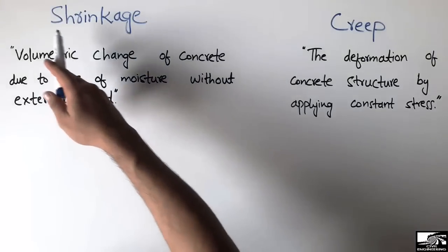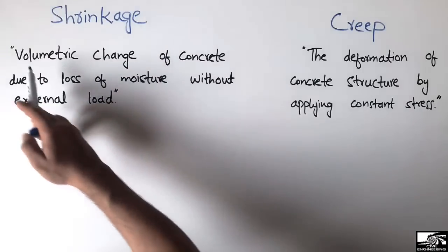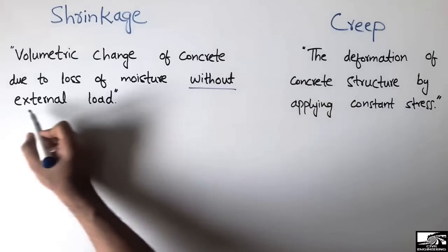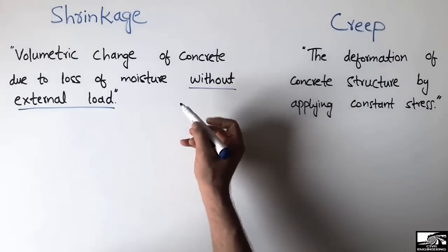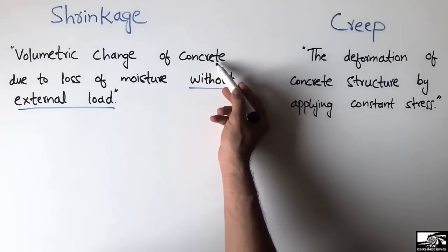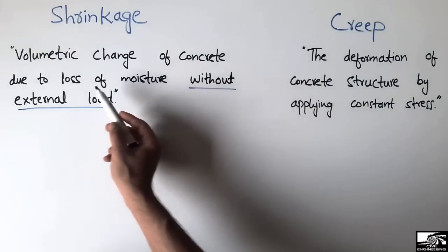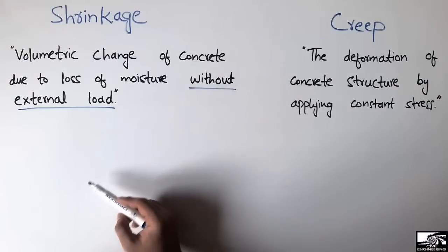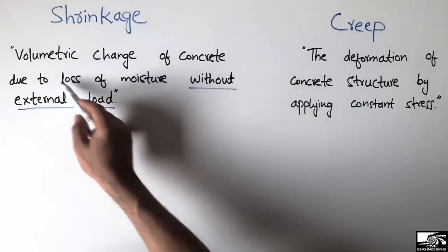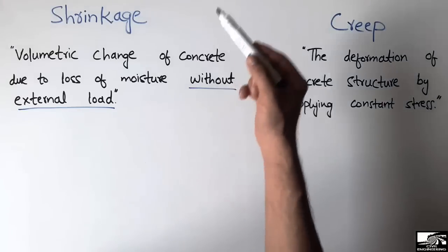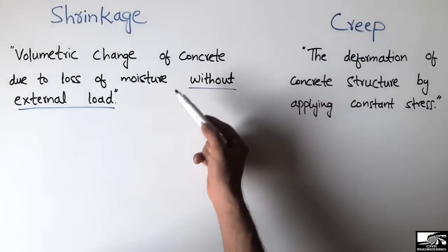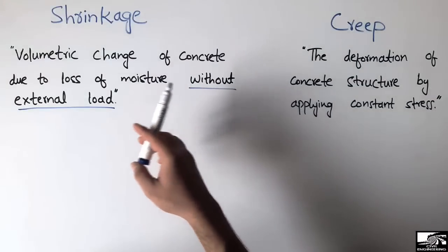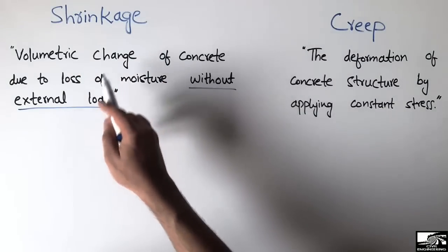First, I will define shrinkage. By definition, it is the volumetric change of the concrete due to the loss of moisture, but without the application of any external load. This is the increase in strain of a concrete member due to moisture loss. The evaporation of water leads to a volumetric decrease of the concrete, and this phenomenon is known as shrinkage.